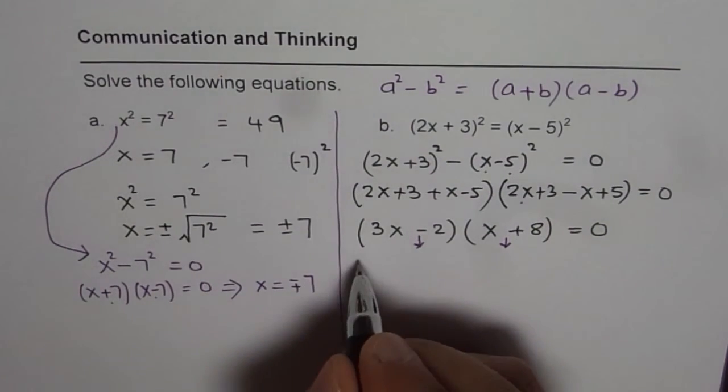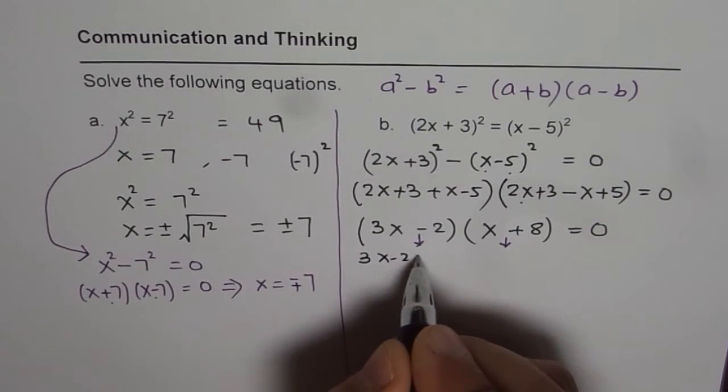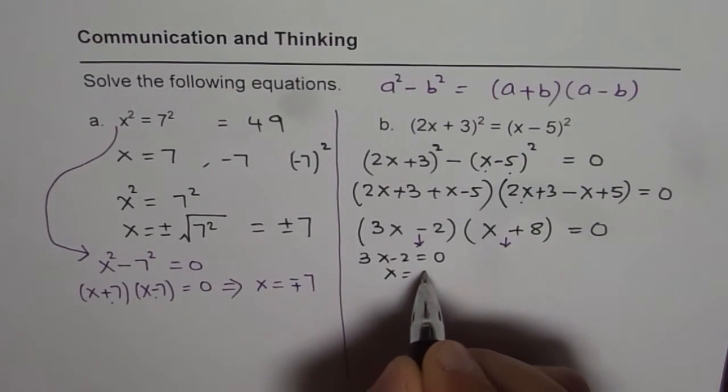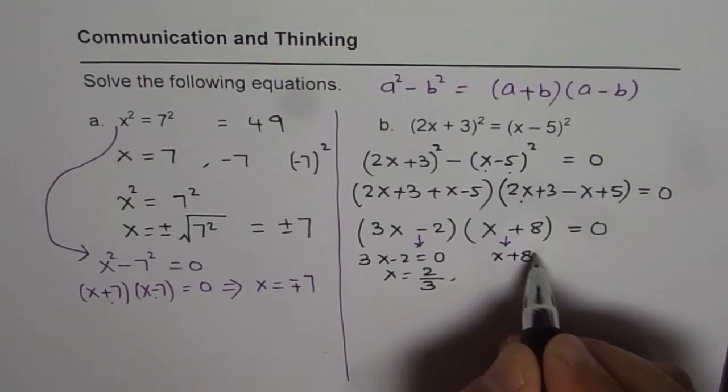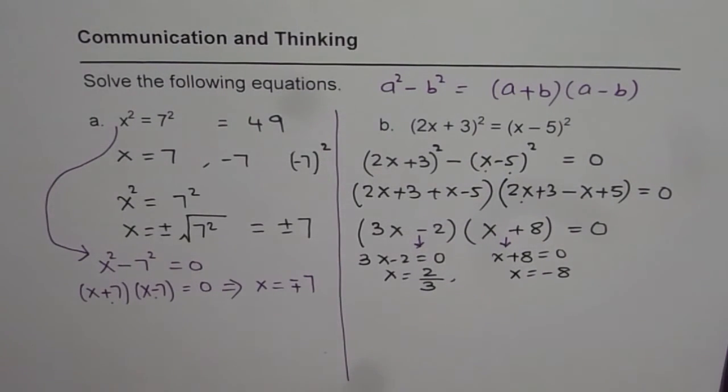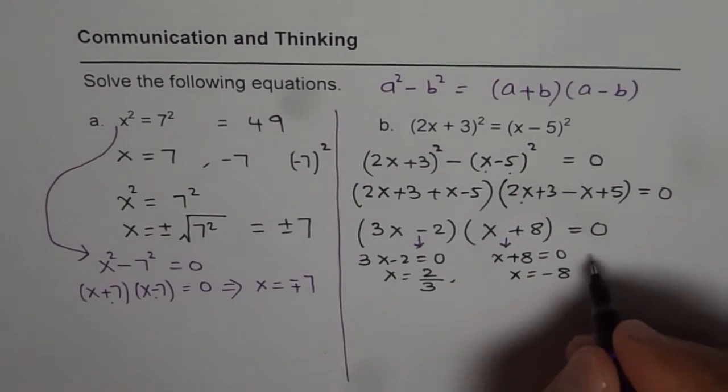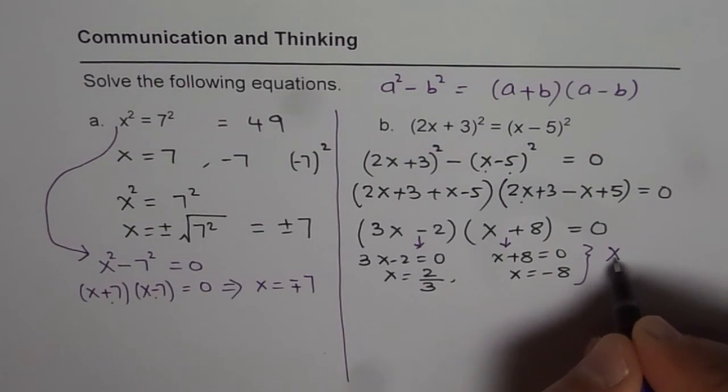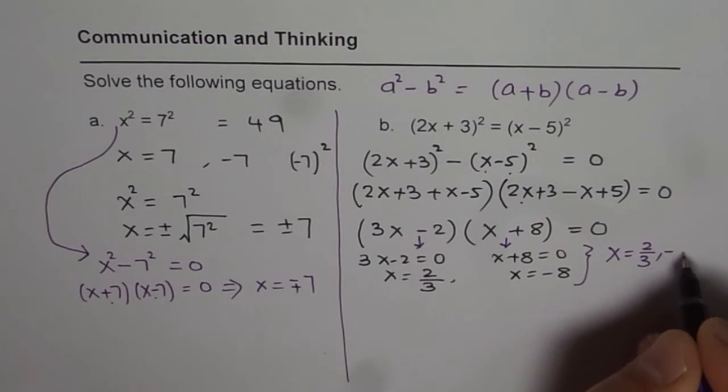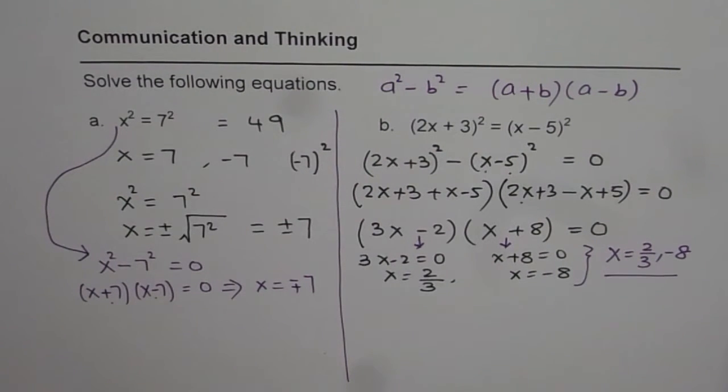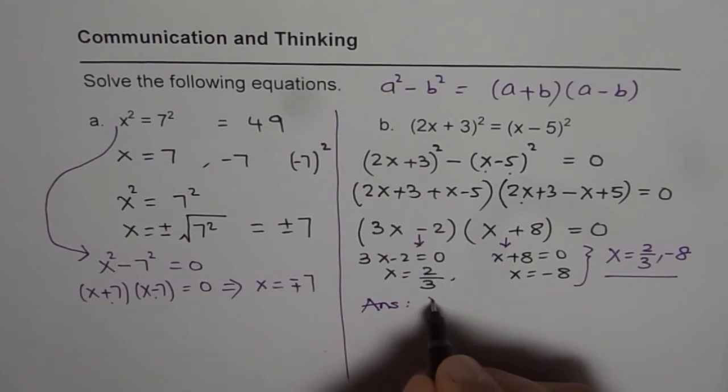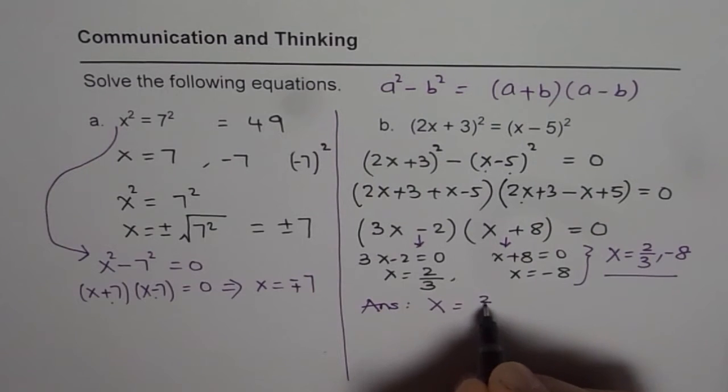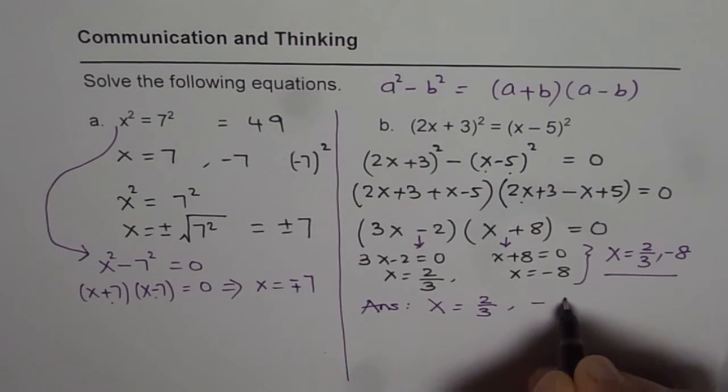So when you equate 3x minus 2 equals to 0, you get x equals to 2 over 3. And here x plus 8 equals to 0 gives you x equals to minus 8. Right? So we get 2 solutions. Right? So 2 solutions are x equals to 2 over 3 or minus 8. So these are the 2 solutions for us. Right? So we can write down our answer.